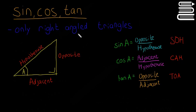You can only use sine, cos and tan for right angle triangles. A lot of people make mistakes trying to use them whenever they see a triangle, but it's only for right angle triangles. There has to be a 90 degree angle in the triangle.